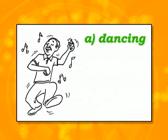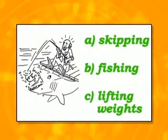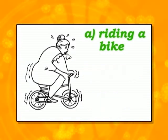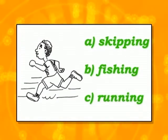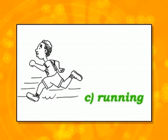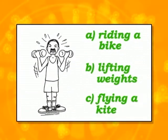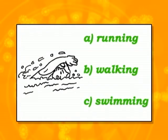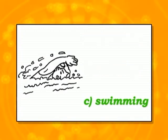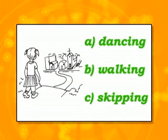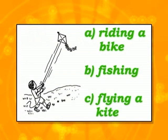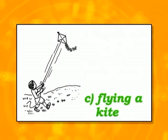A — Dancing. B — Fishing. A — Riding a bike. C — Running. B — Lifting weights. C — Swimming. B — Walking. C — Flying a kite.